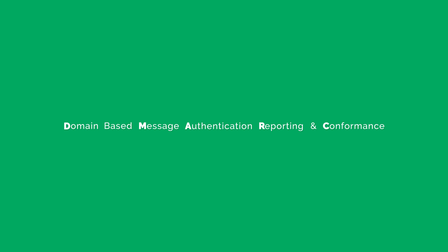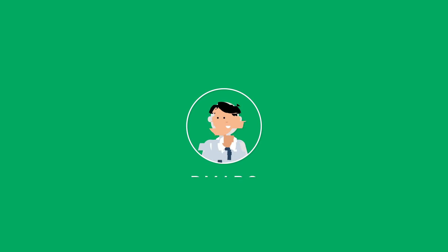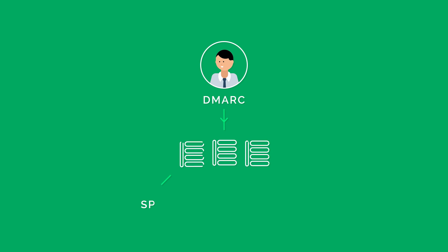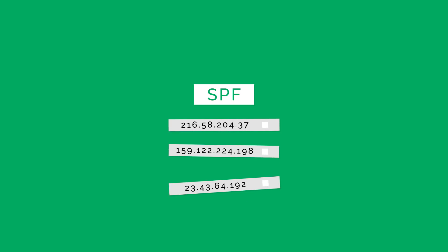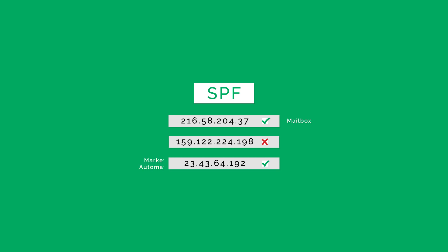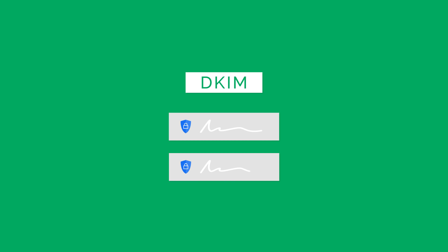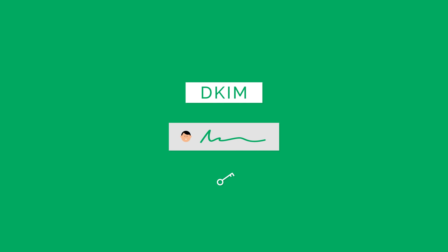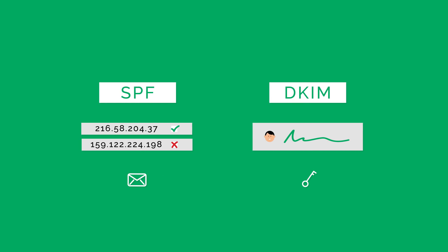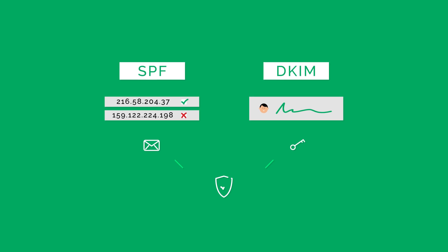Domain-Based Message Authentication Reporting and Conformance, or DMARC, is an open protocol to prevent phishing attacks via impersonation. DMARC compiles the signals from SPF and DKIM, two existing technologies. SPF allows a domain owner to specify which IP addresses are authorized to send an email on their behalf. DKIM uses an encrypted signature to verify if an email sender is who they say they are, and gives a key to the recipient to check back with the sender's DNS record. They both produce individual authentication identifiers that help validate email in different ways.